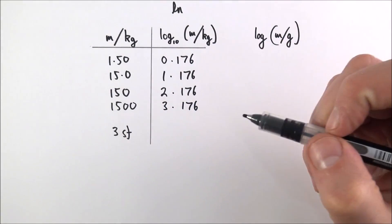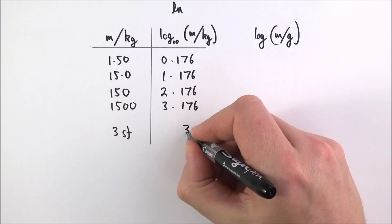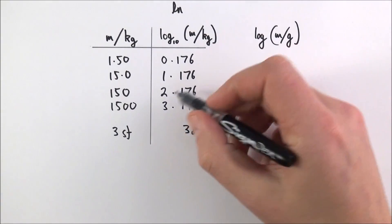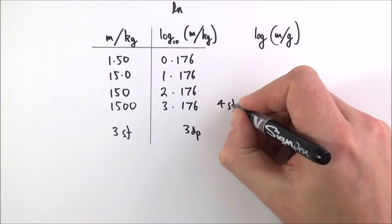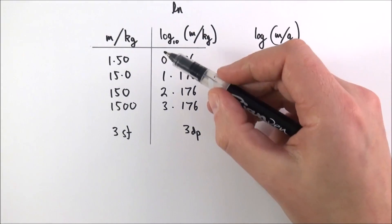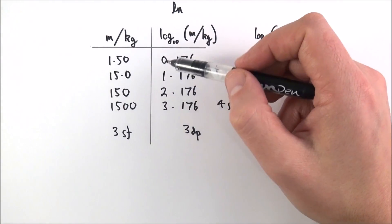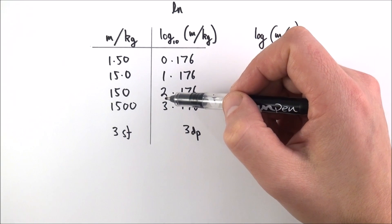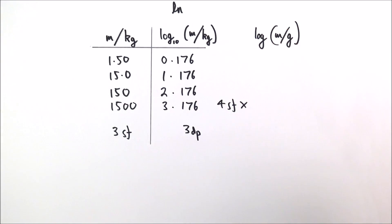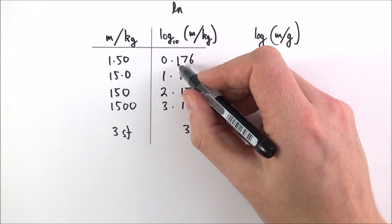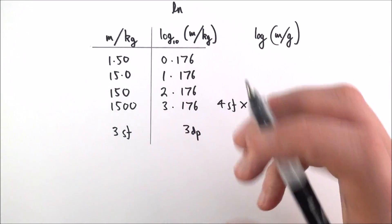The important thing is that although this is given to three decimal places, these values aren't really to four significant figures. The first figure, which we call a characteristic, doesn't contribute to the significance of this value. Really, the 176 are the significant figures.